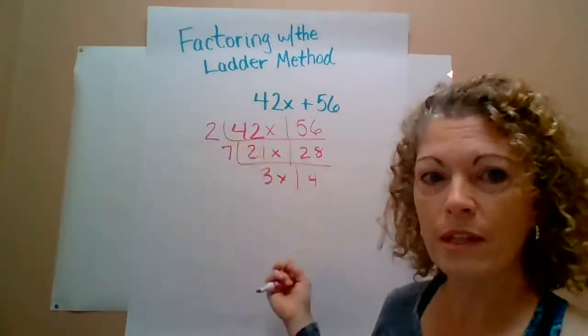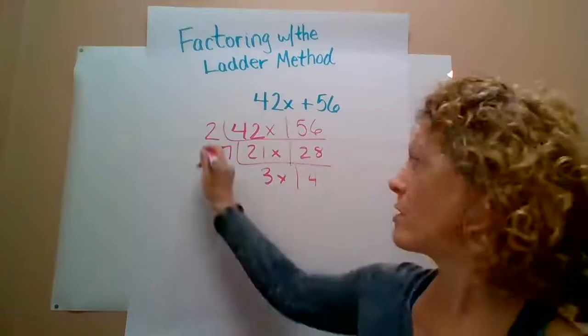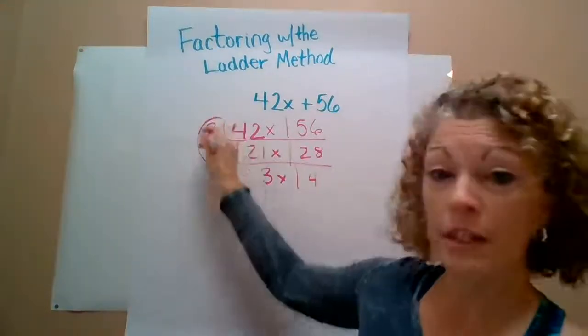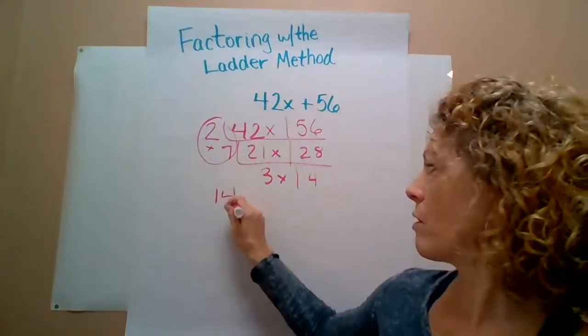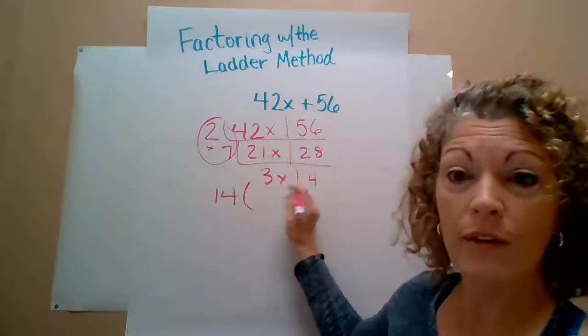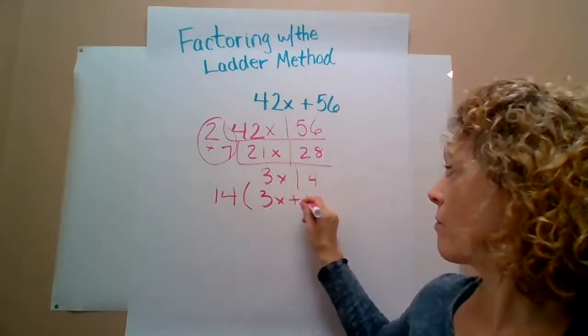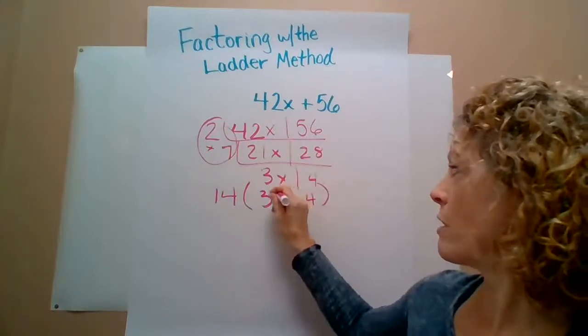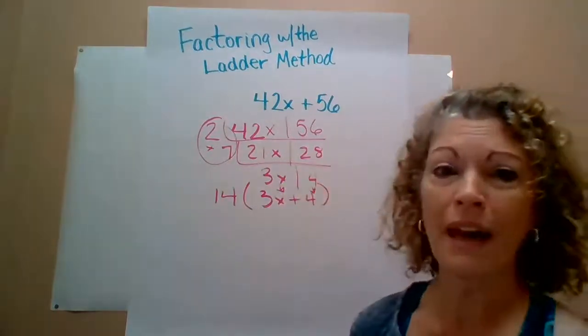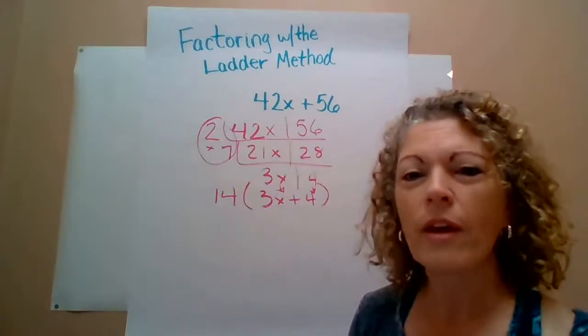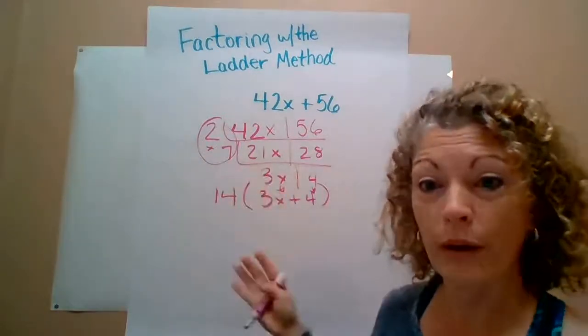So the way this converts that into their final factored expression is they take the GCF on the outside. And then they take what's down here at the bottom, the remaining factors, and they put that into their parentheses. And it kind of organizes that information for them really well and helps them remember what goes where.